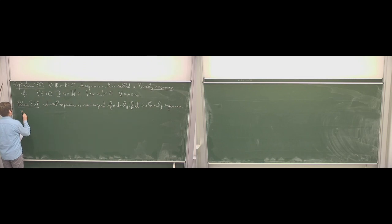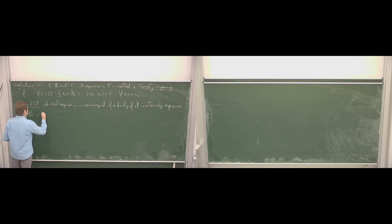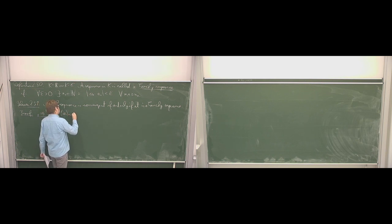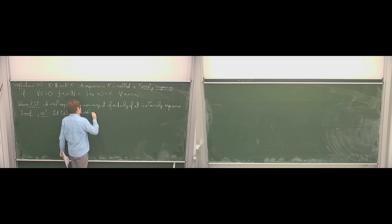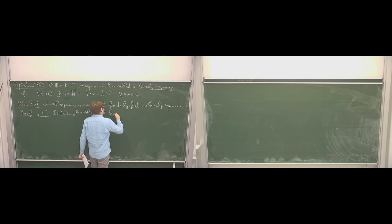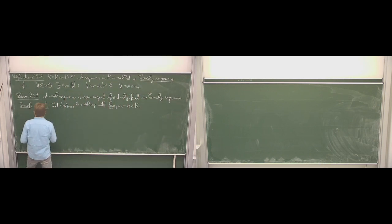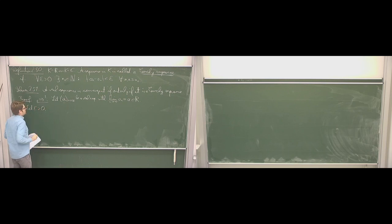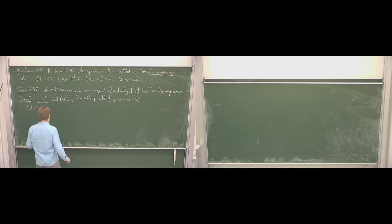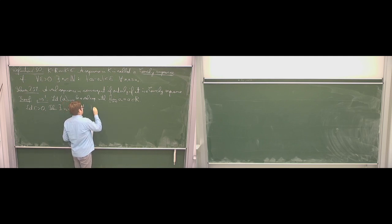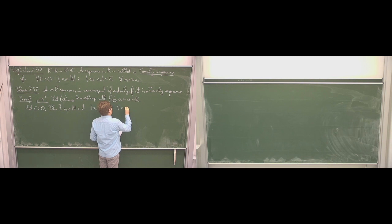This is not too hard to prove. First we go in the direction assuming convergence. Let a_N be a real sequence with a limit, so this converges against some A which is a real number. Let epsilon be bigger than zero. We use the convergence of a_N: there exists an N₀ in ℕ such that the absolute value of a_N minus A is smaller than epsilon over 2 for all N bigger than or equal to N₀.